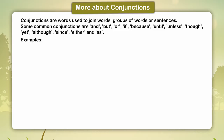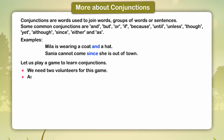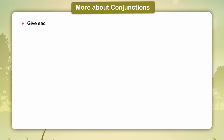Examples: Mila is wearing a coat and a hat. Sanya cannot come since she is out of town. Let us play a game to learn conjunctions. We need two volunteers for this game. Ask the volunteers to pick out two sentences from a pot and give each volunteer a separate sentence.